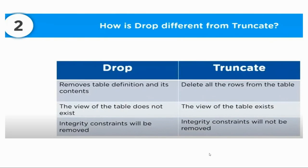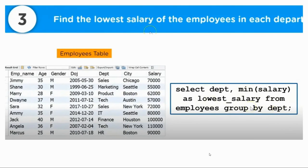Difference between DROP and TRUNCATE: DROP removes the table definition and its contents, so the view of the table does not exist afterward. TRUNCATE deletes all rows from the table but the view of the table still exists. In DROP, integrity constraints will be removed; in TRUNCATE, integrity constraints will not be removed.